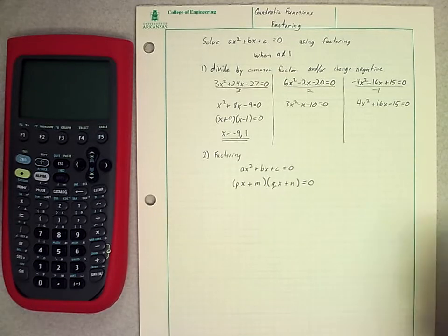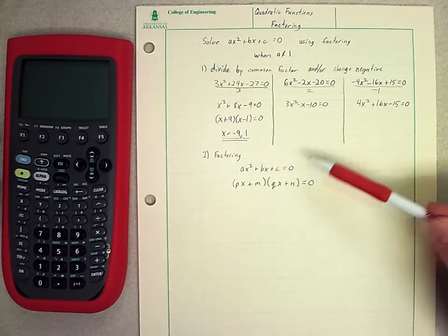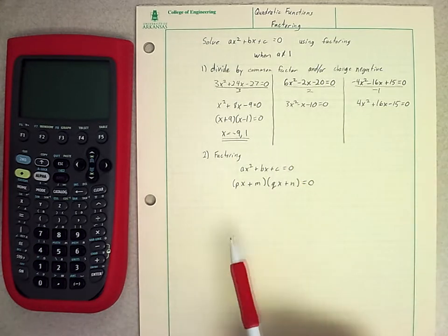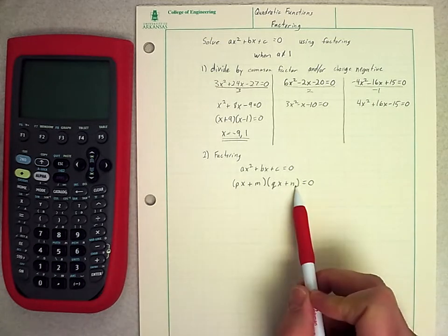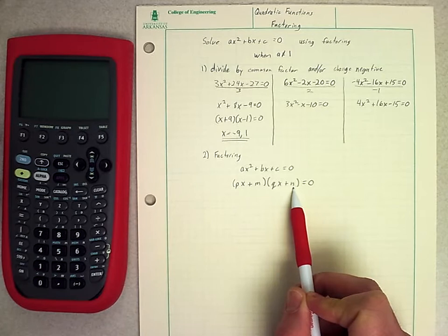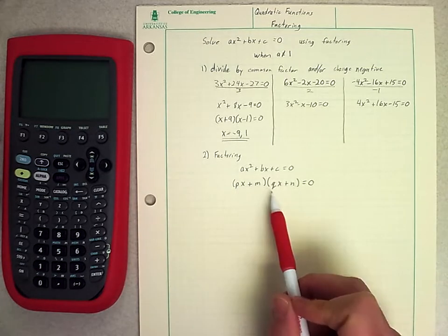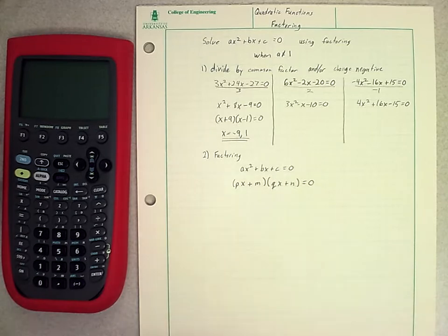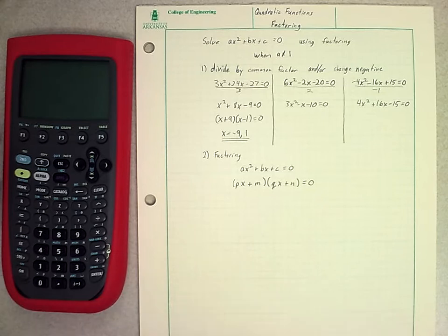We're still at the point where we haven't learned how to really solve those yet. If we're trying to factor, remember we're starting with ax² + bx + c = 0. And what we're trying to do is break it down into two factors. I've used m and n for the constant values, just like we used when we had a coefficient of 1. But also now we may have coefficients in front of our x terms, so I've used p and q.